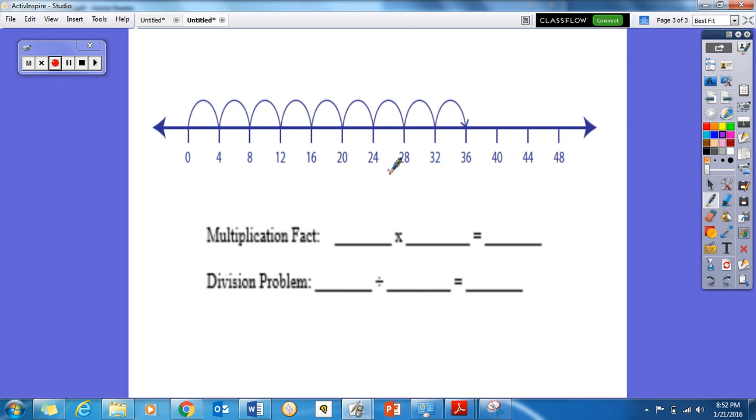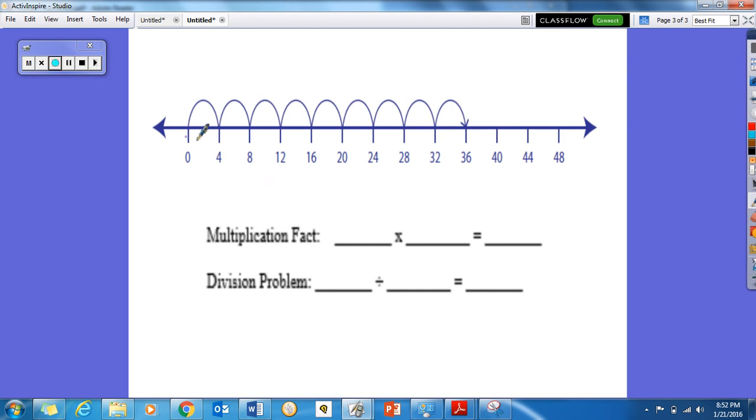Let's try this next one together. Our multiplication fact we see here, we are skip counting by 4s. Let's see how many hops we have. 1, 2, 3, 4, 5, 6, 7, 8, 9. We skip counted 9 times, so 9 times 4 equals our product, 36.